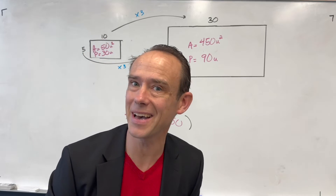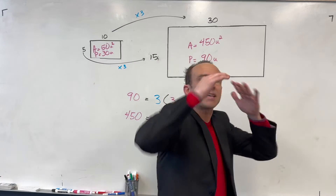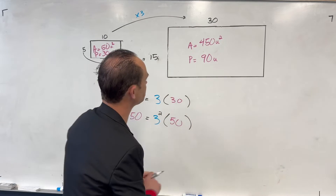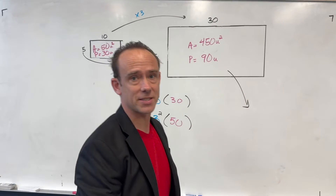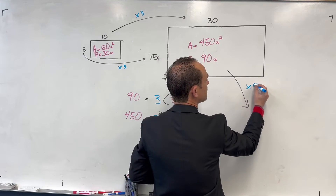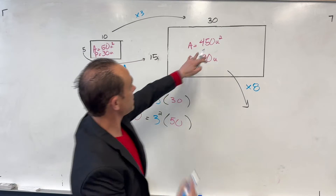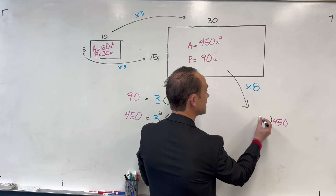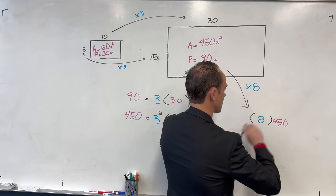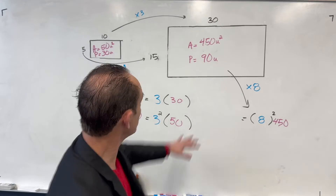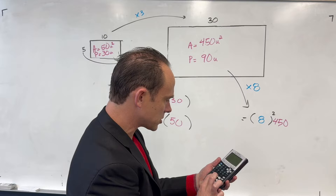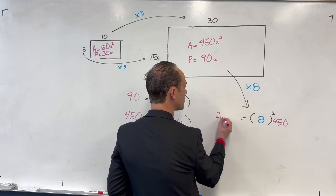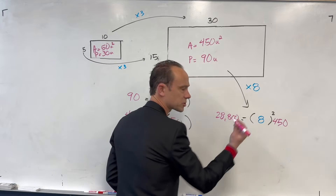We found a better way! Now I could ask for any scale factor. For example, scale factor of 8: the new area would be the old area — 450 — times the scale factor squared. 8² = 64, and 64 × 450 = 28,800 square units. Don't have to recalculate dimensions or anything.